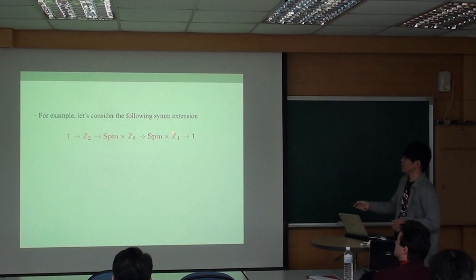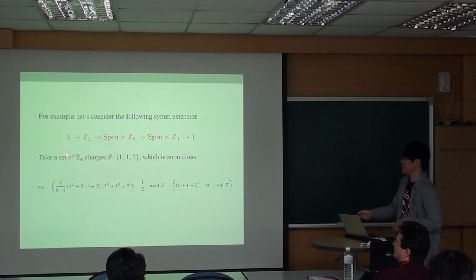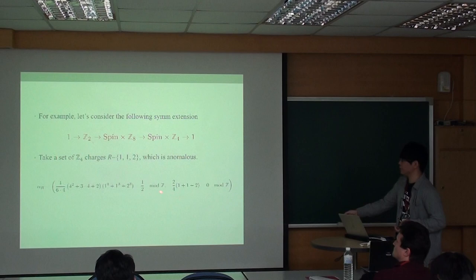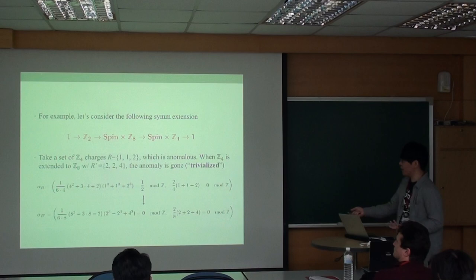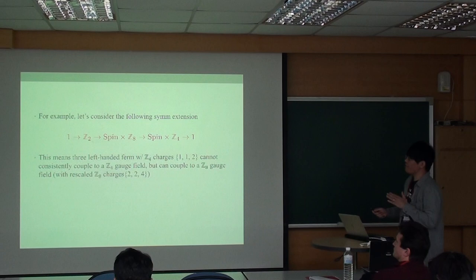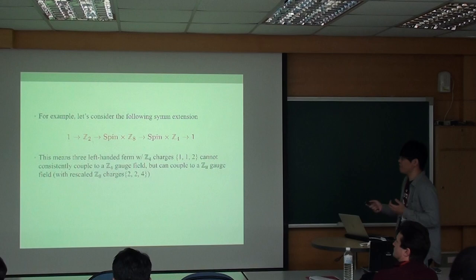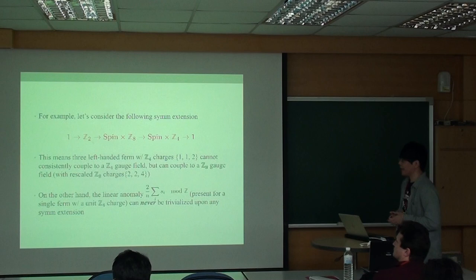For example, let's consider the following extension from Z4 to Z8. Take the Z4 charge 1,1,2, which is anomalous by my formula - there is one-half here which is non-trivial. When this Z4 is extended to Z8 with the charge doubled, the anomaly is gone, that is, it's trivialized. This means three left-handed Weyl fermions with Z4 charge 1,1,2 cannot consistently couple to a Z4 gauge field, but can couple to a Z8 gauge field with the scaled Z8 charge 2,2,4.